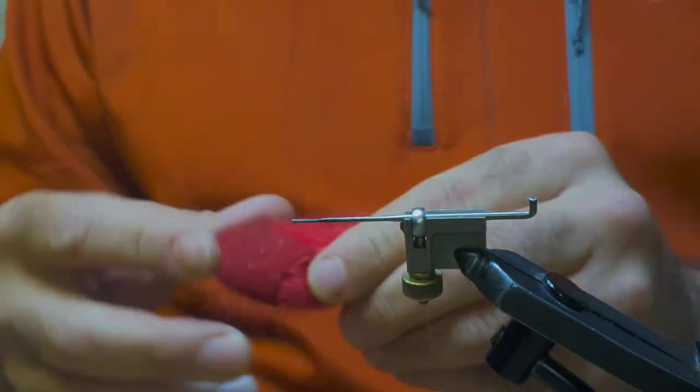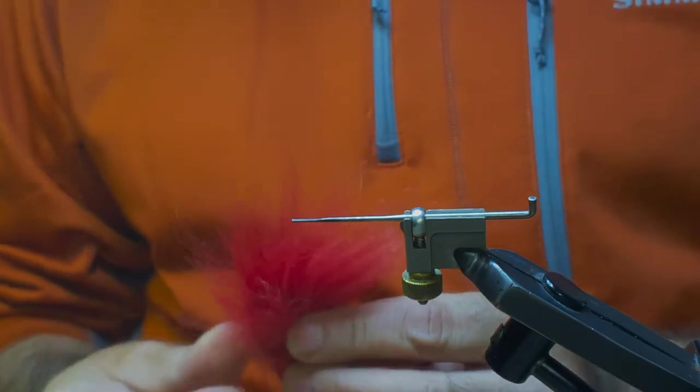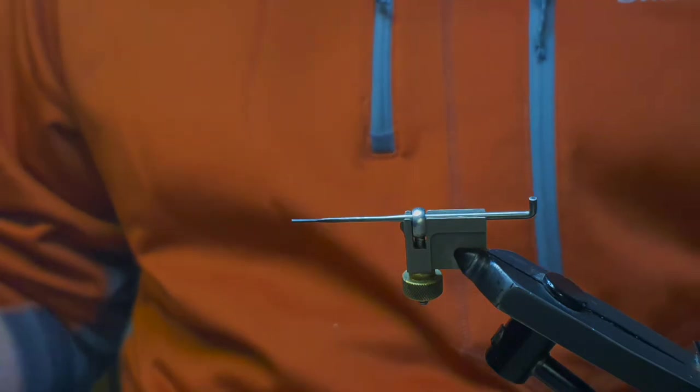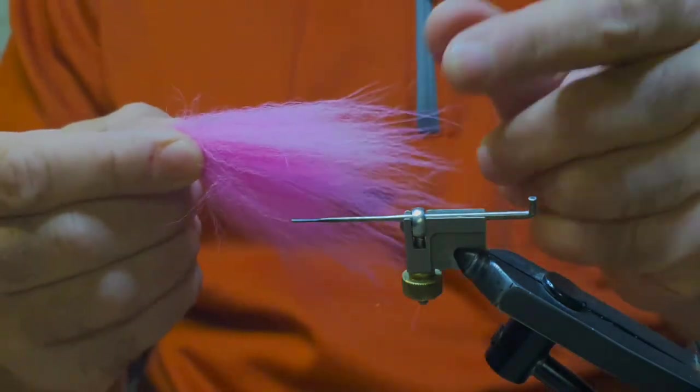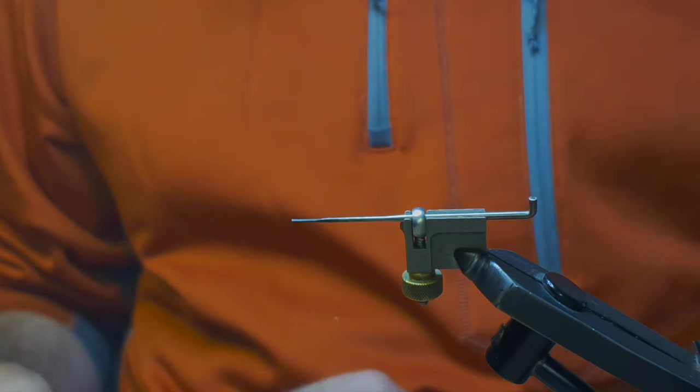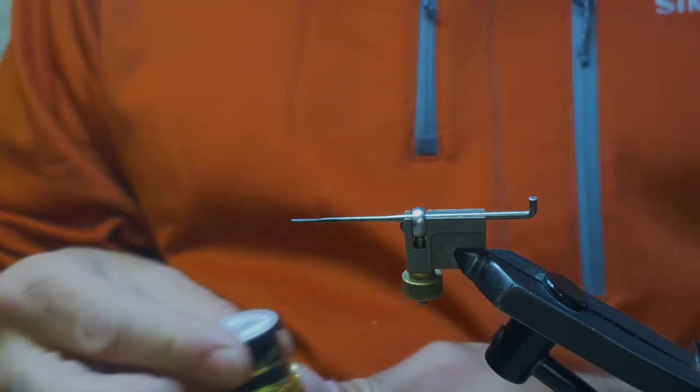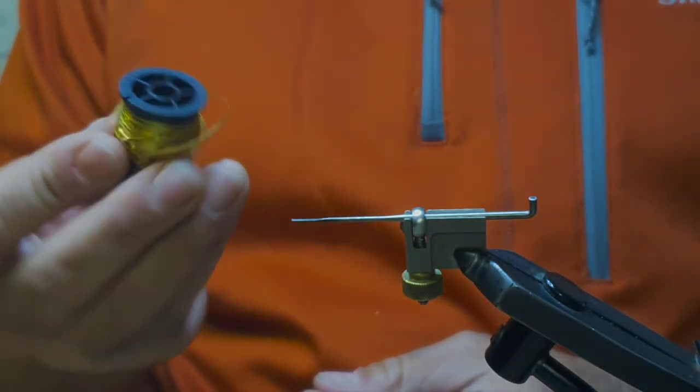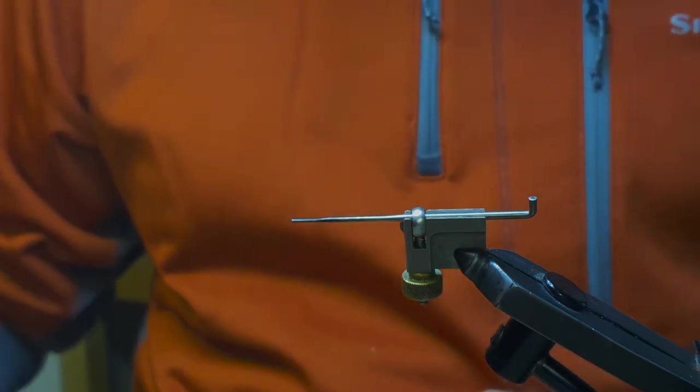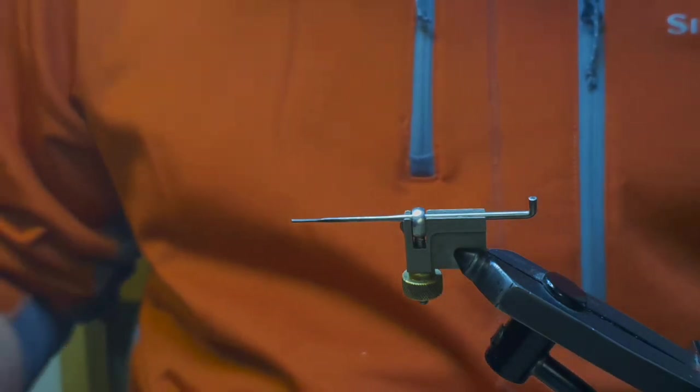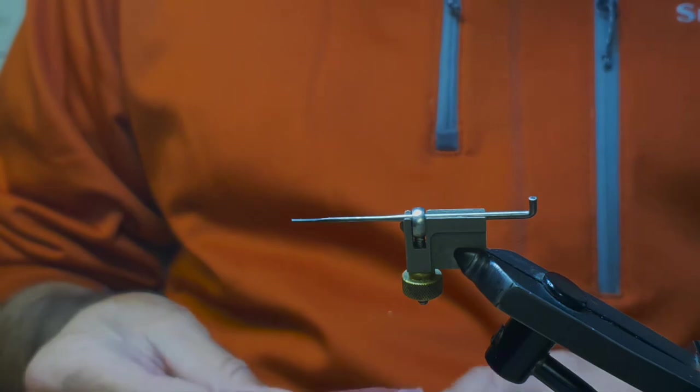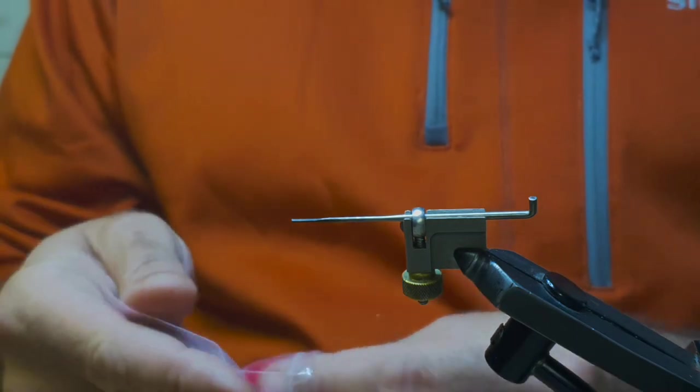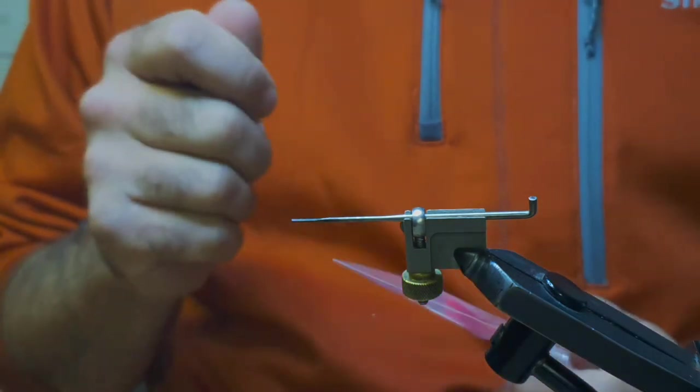The tail is going to comprise of red Arctic runner, orange Arctic runner, and I don't have the pink Arctic runner so I'm just going to use some pink fox. Then when we move on to the body I'll have this really good Lagartun wide flat oval tinsel, and the dubbing for the body is just a mix of bright reds and pearls that really look good when you tease it out with a dubbing brush.